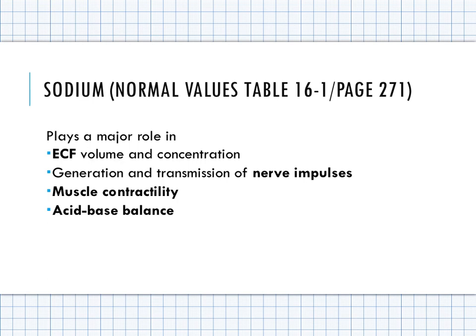Signs and symptoms are listed on page 279, table 16-4. For hypernatremia, there is a fluid shift causing shrinkage of cells — brain cells shrivel, resulting in neurological signs and symptoms. In hyponatremia, cells swell, yet also result in neurological signs and symptoms. In general, someone with a sodium imbalance can experience lethargy, confusion, weakness, seizures, and coma. Remember there is typically a fluid imbalance associated with both hyper- and hyponatremia.